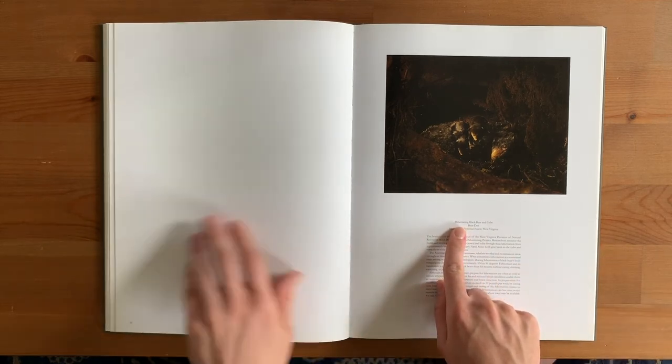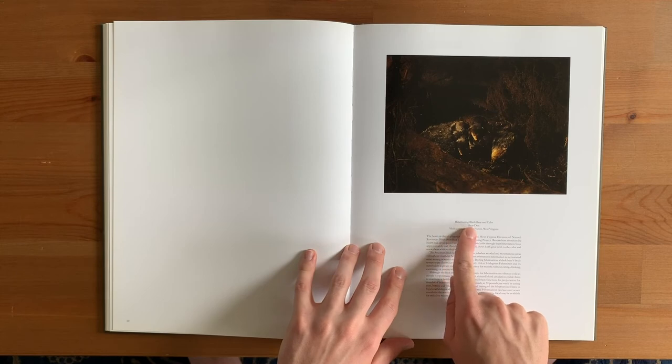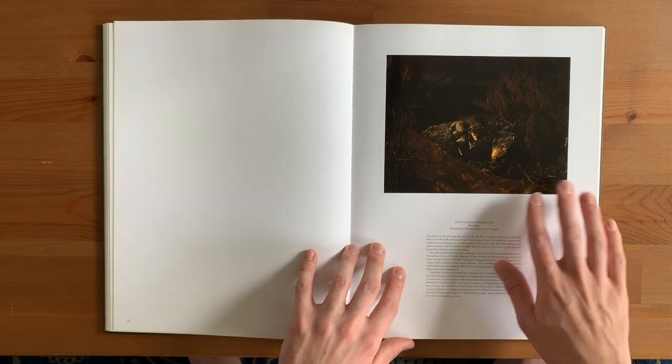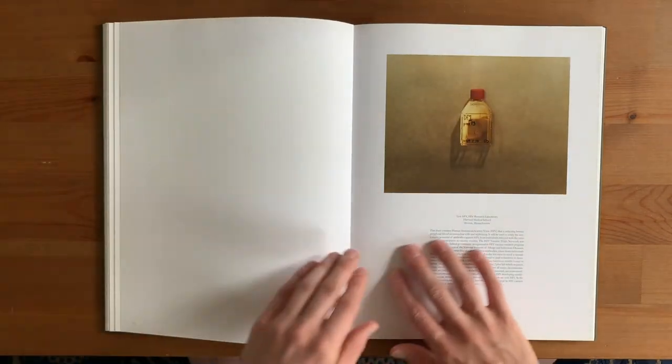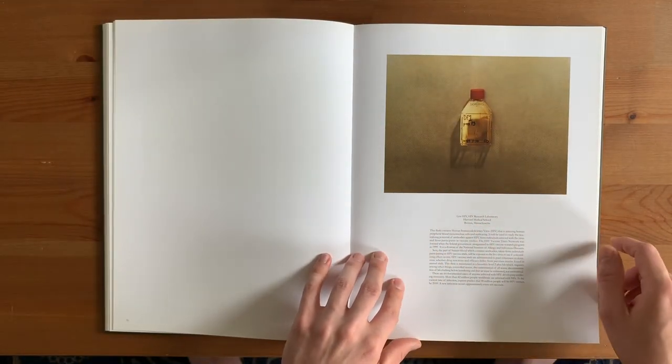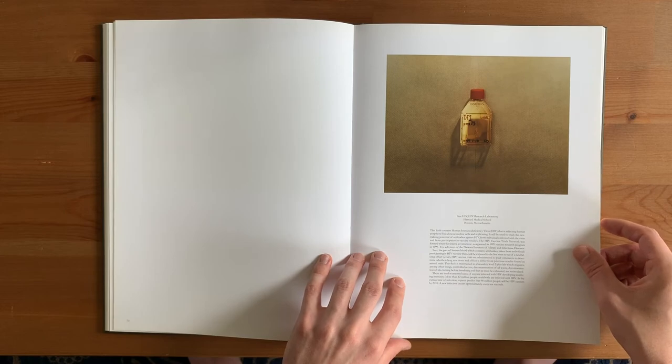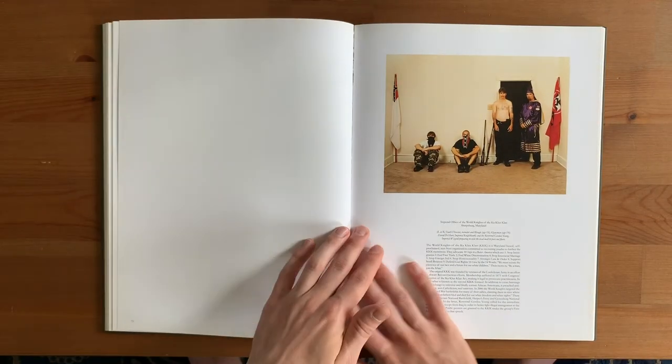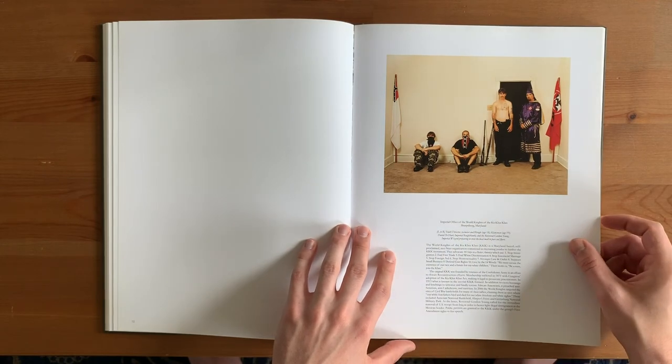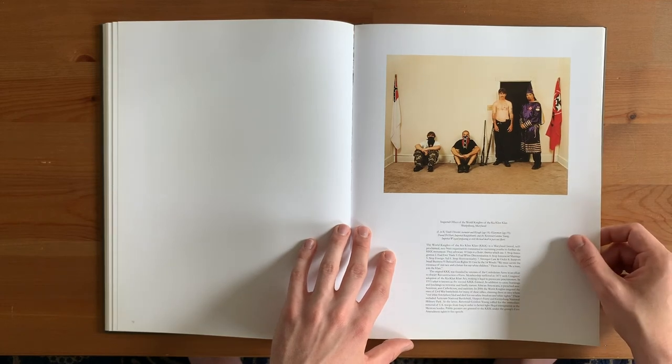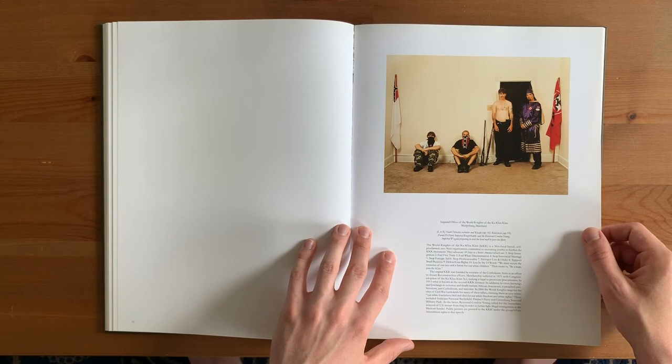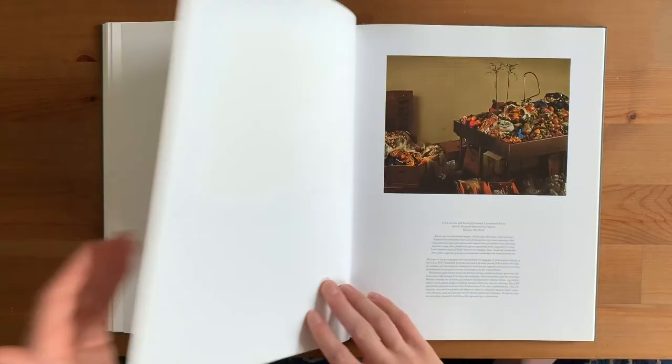So here we have a photograph that Salman Rushdie talks about. Hibernating black bear and cubs bear den in West Virginia. She went into a bear's den that was hibernating to make a picture. Wild. Live HIV, HIV research laboratory, Harvard Medical School, Boston, Massachusetts. Imperial Office of the World Knights of the Ku Klux Klan, Sharpsburg, Maryland. So she was able to convince these men to let her make a photograph of them. Fascinating.